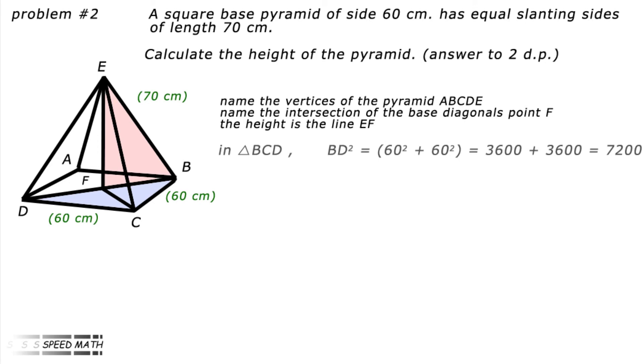In triangle BCD, BD squared equals 60 squared plus 60 squared which equals 3,600 plus 3,600 which equals 7,200. So BD equals the square root of 7,200. BF equals half of BD which equals the square root of 7,200 divided by 2.